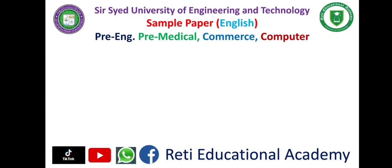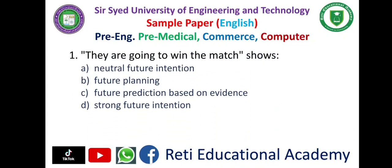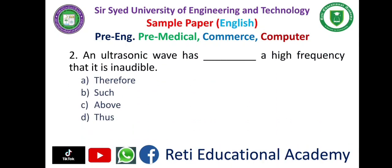Sample paper for English. There will be the same English questions for pre-engineering, pre-medical, commerce, and computer group. Question number one: 'They are going to win the match' shows — A. Natural future intention, B. Future planning, C. Future prediction based on evidence, D. Strong future intention. The correct answer is C: future prediction.